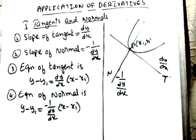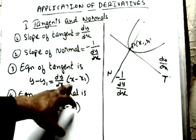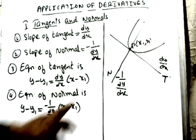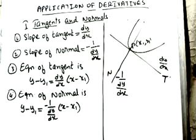The equation of the tangent is: y − y₁ = (dy/dx)(x − x₁). The equation of the normal is: y − y₁ = (−1/(dy/dx))(x − x₁).